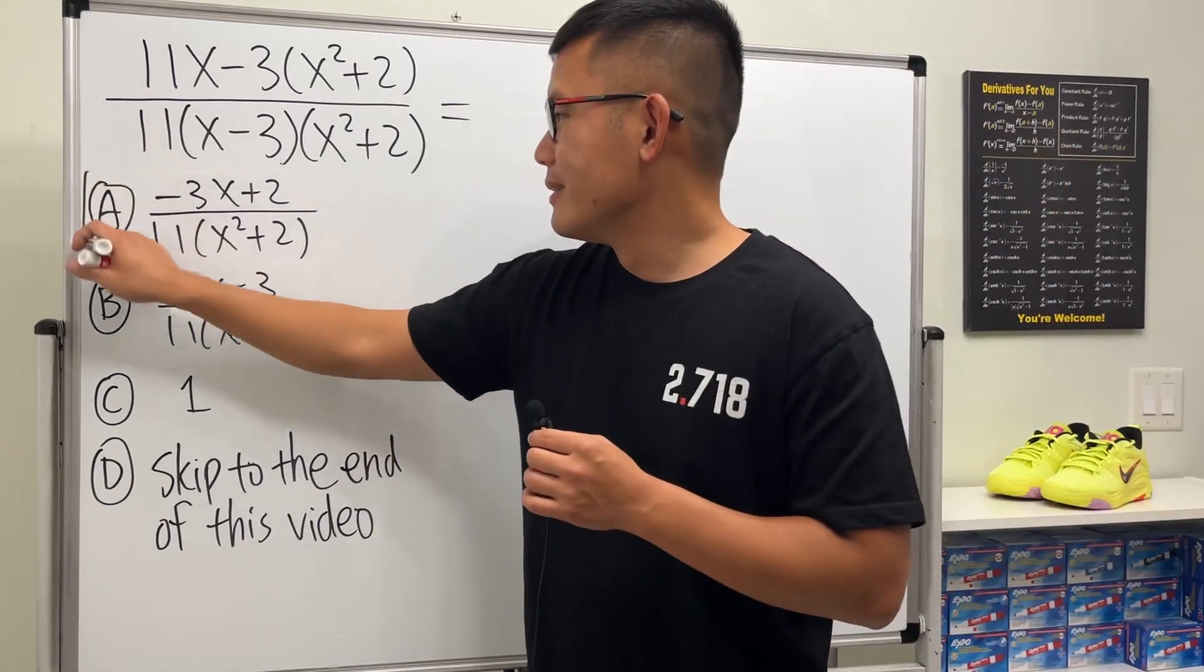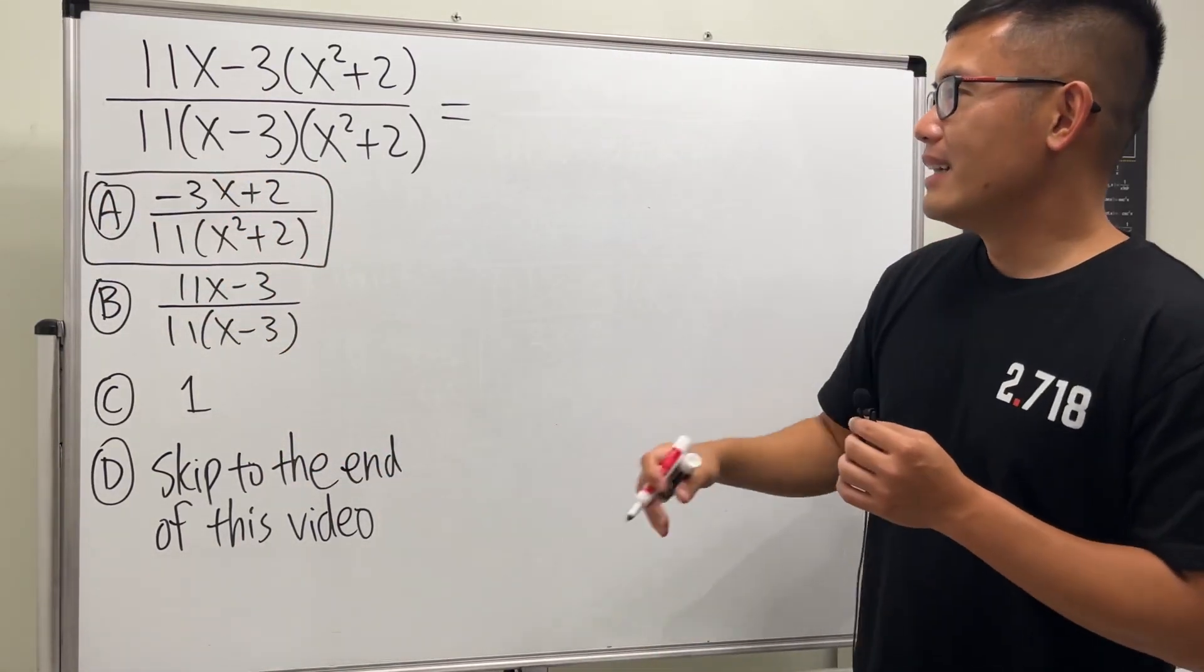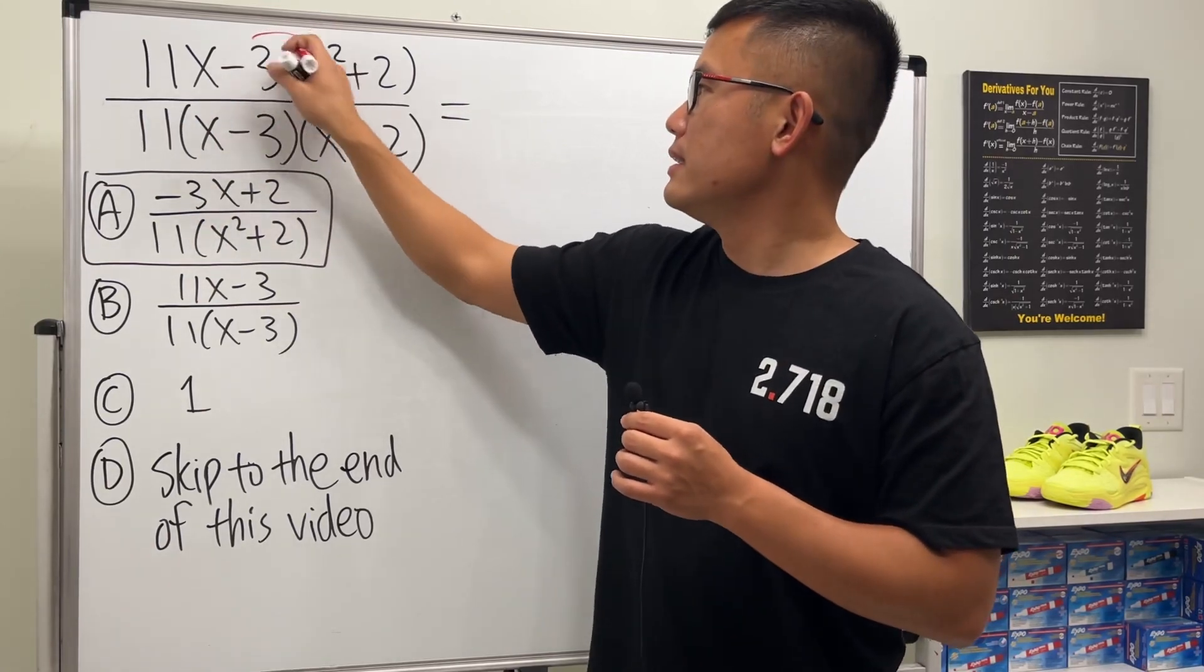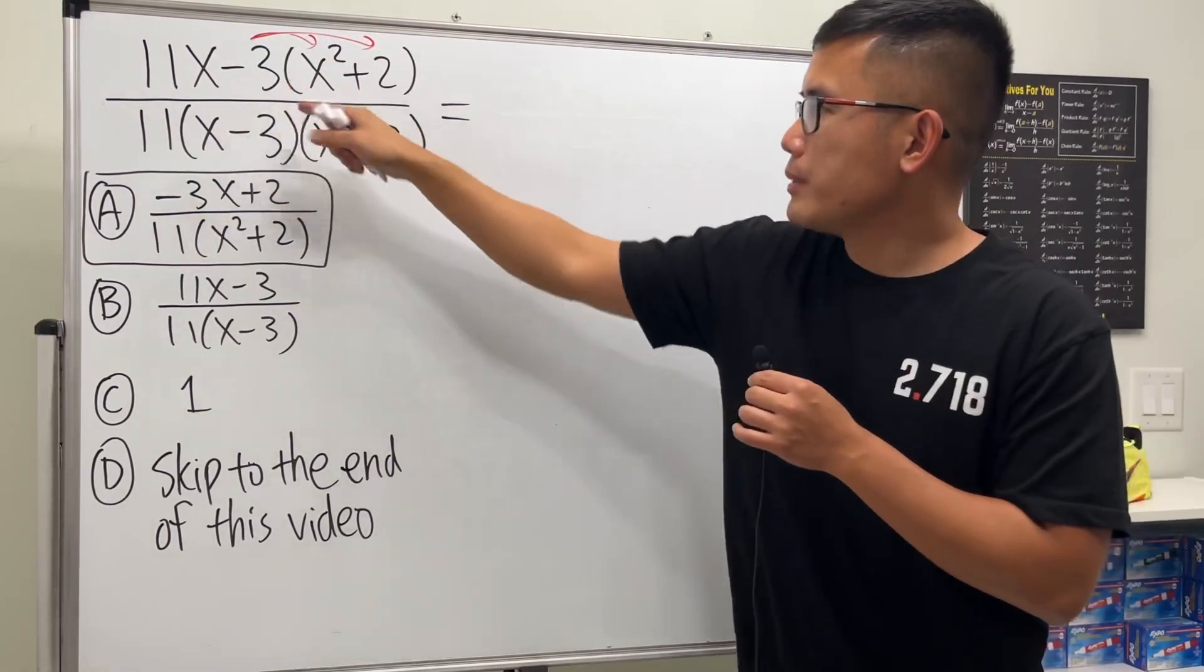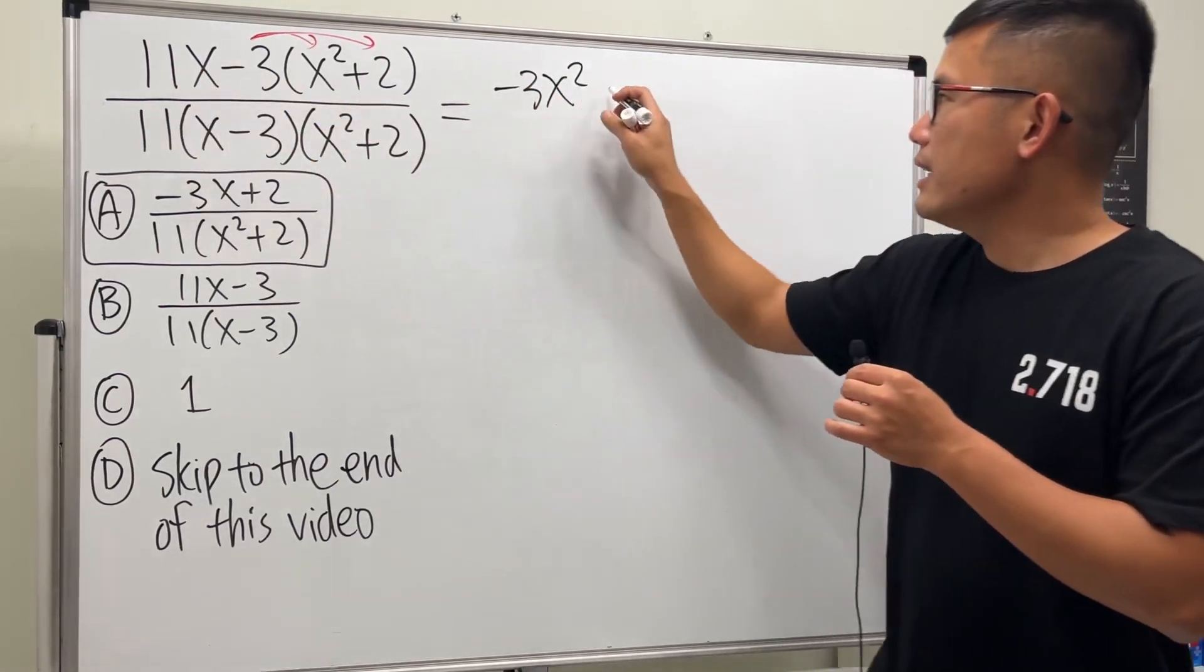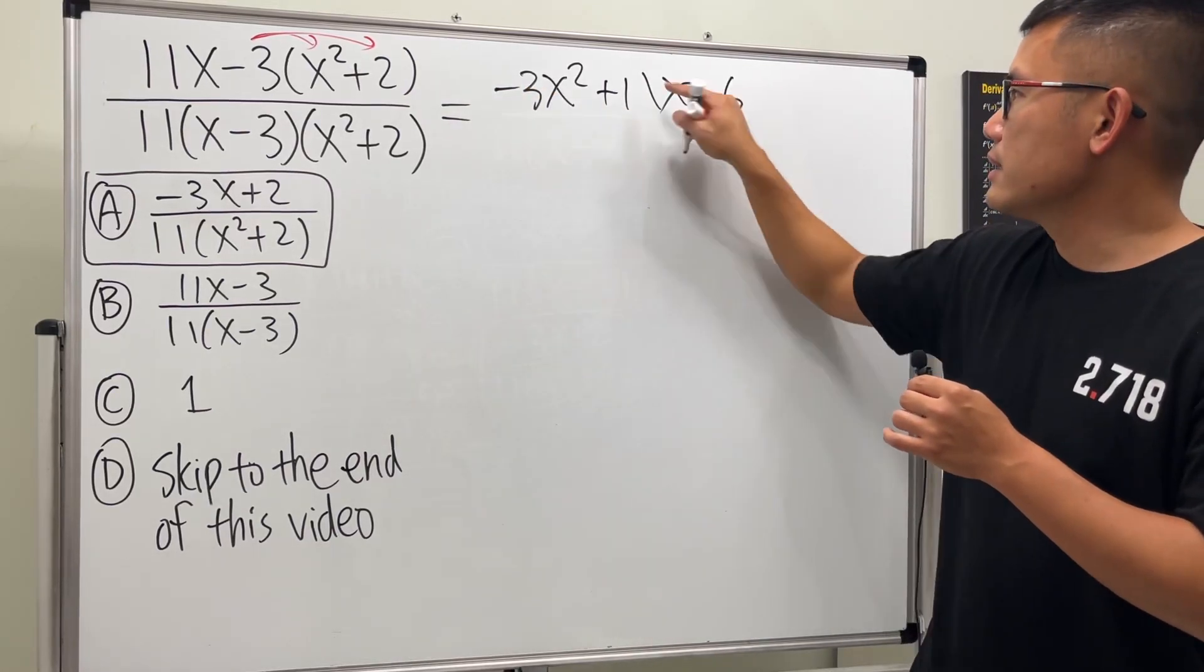But of course now let's go ahead and see why this is the case. All right, so the top, take your -3, multiply this in right. So I'm going to write that down, we have -3x² and then this is 11x and then we have that -3 times 2 which is -6.